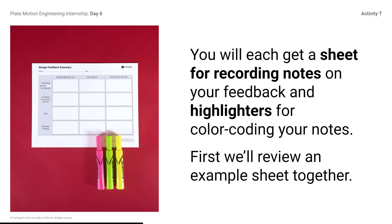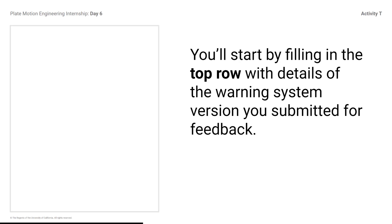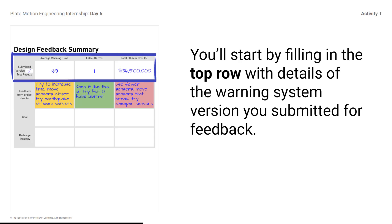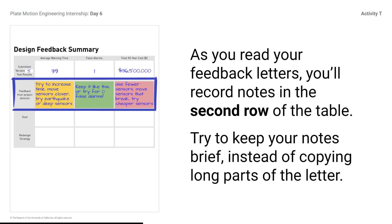You will each get a sheet for recording notes on your feedback and highlighters for color coding your notes. First we'll review an example sheet together. You'll start by filling in the top row with details of the warning system version you submitted for feedback — the design version marked with a star on your tsunami alert data sheet. Or you can review the design information by opening the tsunami alert design form in Futuro Workspace. As you read your feedback letters, you'll record notes on the second row of the table. Try to keep your notes brief instead of copying long parts of the letter. These are an example of brief notes — you should interpret the project director's suggestions through short notes to yourself.